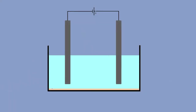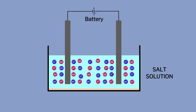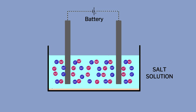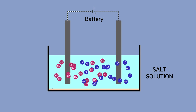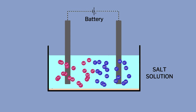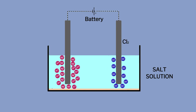When electric current passes through a conducting solution it results in a chemical reaction. Here the conducting solution is salt solution and the source of electric current is a 9-volt battery. Salt consists of positive sodium ions and negative chloride ions, and water consists of positive hydrogen ions and negative hydroxyl ions. When electric current is switched on, the charged ions start moving towards the oppositely charged electrode — the electrodes here are the graphite leads of the pencil. At the positive electrode, negatively charged chloride and hydroxyl ions gather and result in formation of chlorine gas.